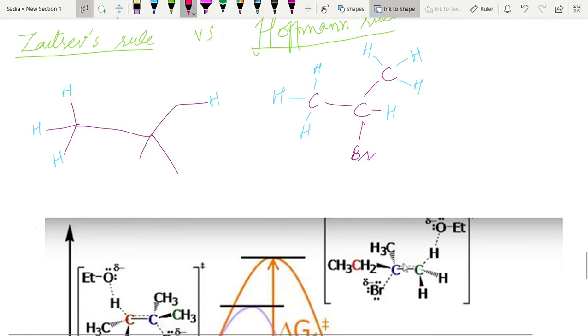So if I say how many beta hydrogens I have, I will say that I have, this is also beta hydrogen, this is also beta hydrogen, this is also beta hydrogen, all these are also beta hydrogen. All of these are beta hydrogens.